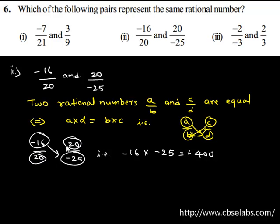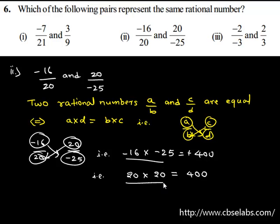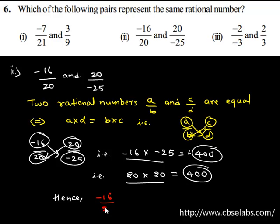Now the product of the numerator of the second with the denominator of the first rational number — that is, 20 times 20 — gives 400. Clearly, both products are equal to 400. Therefore, we can say that negative 16 upon 20 is equal to 20 upon negative 25.